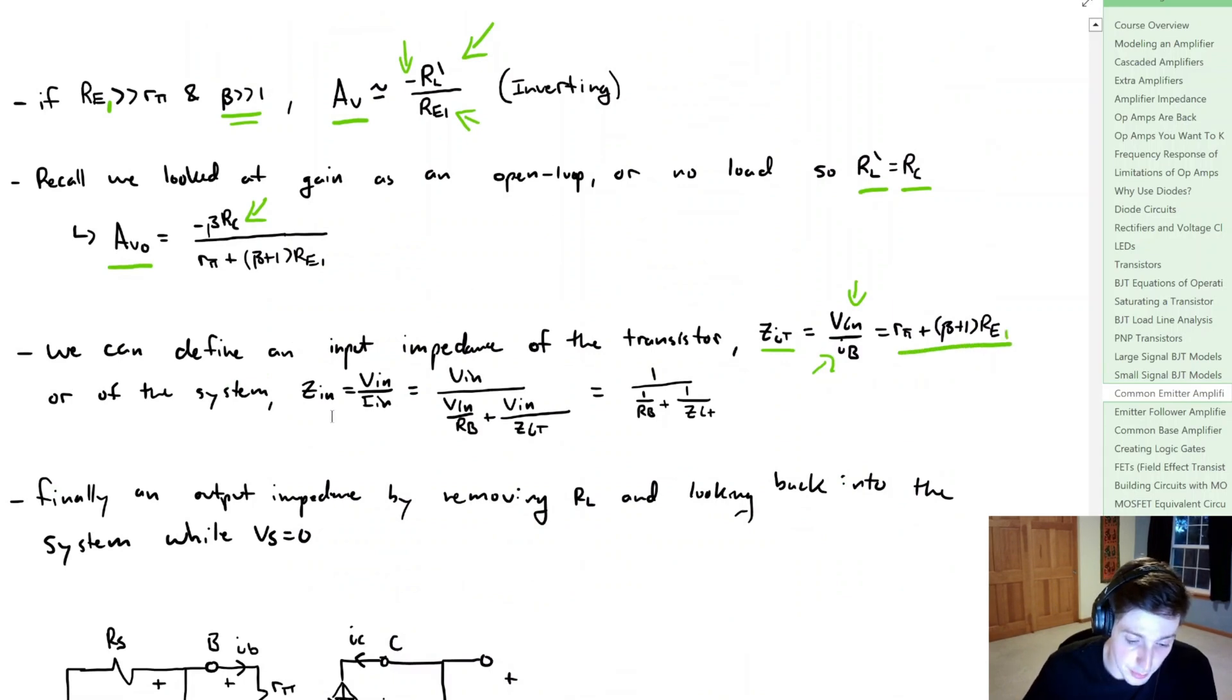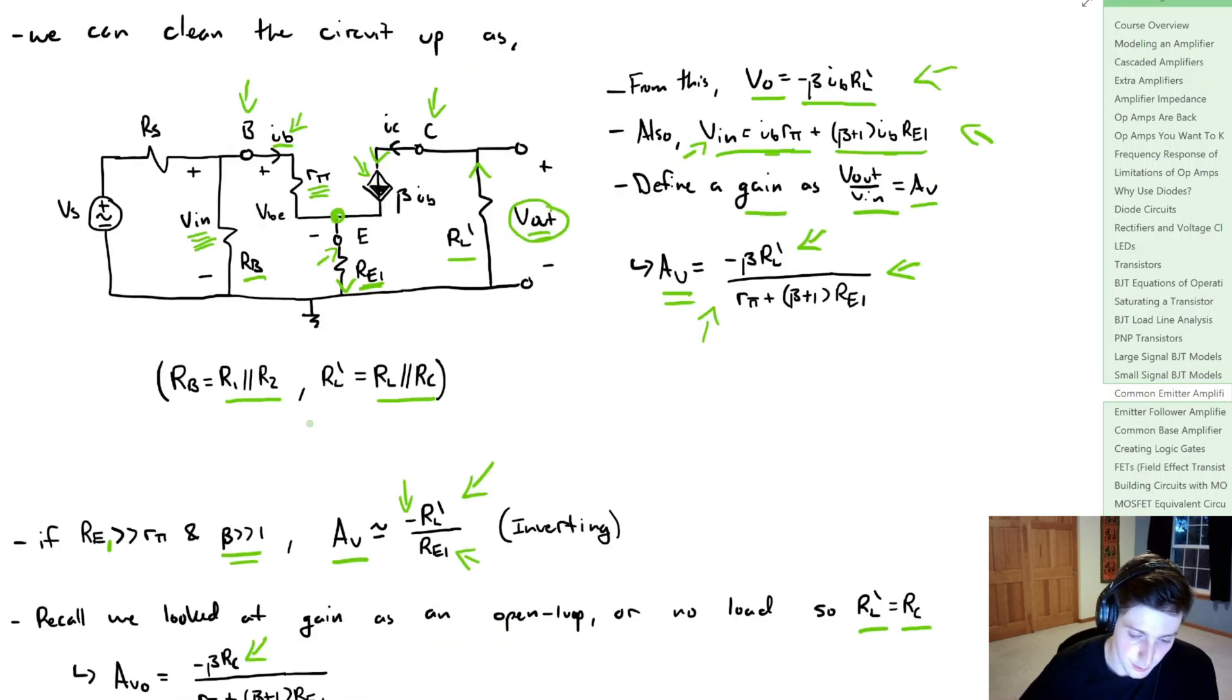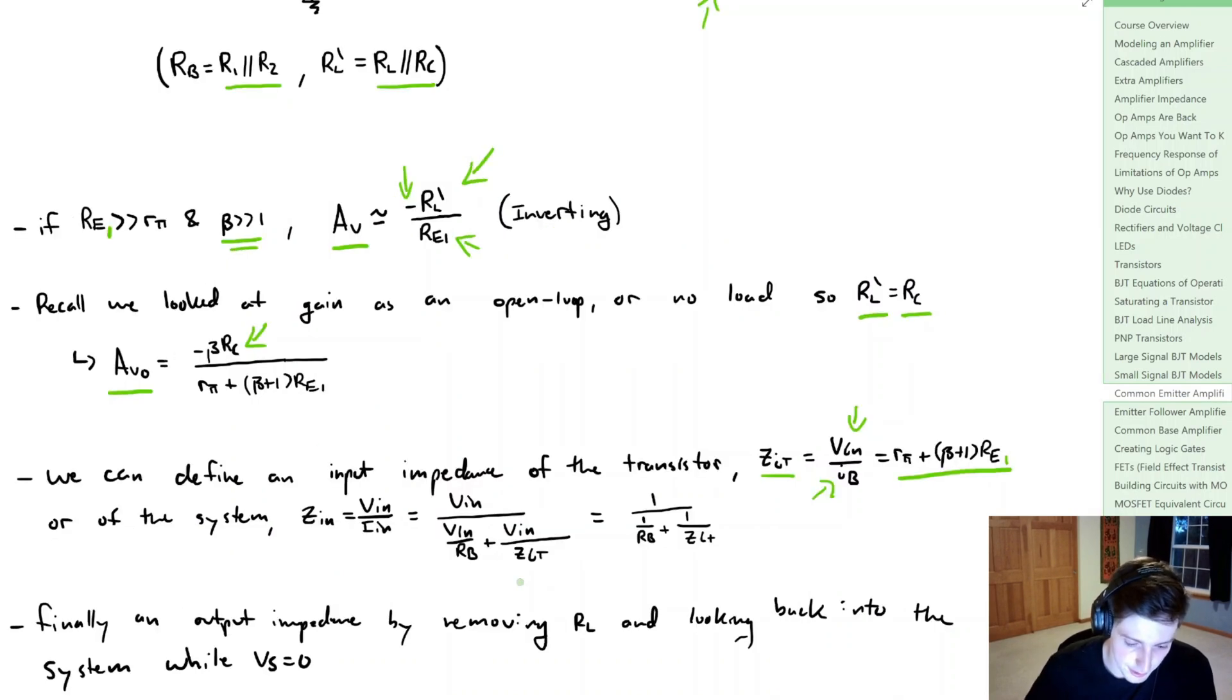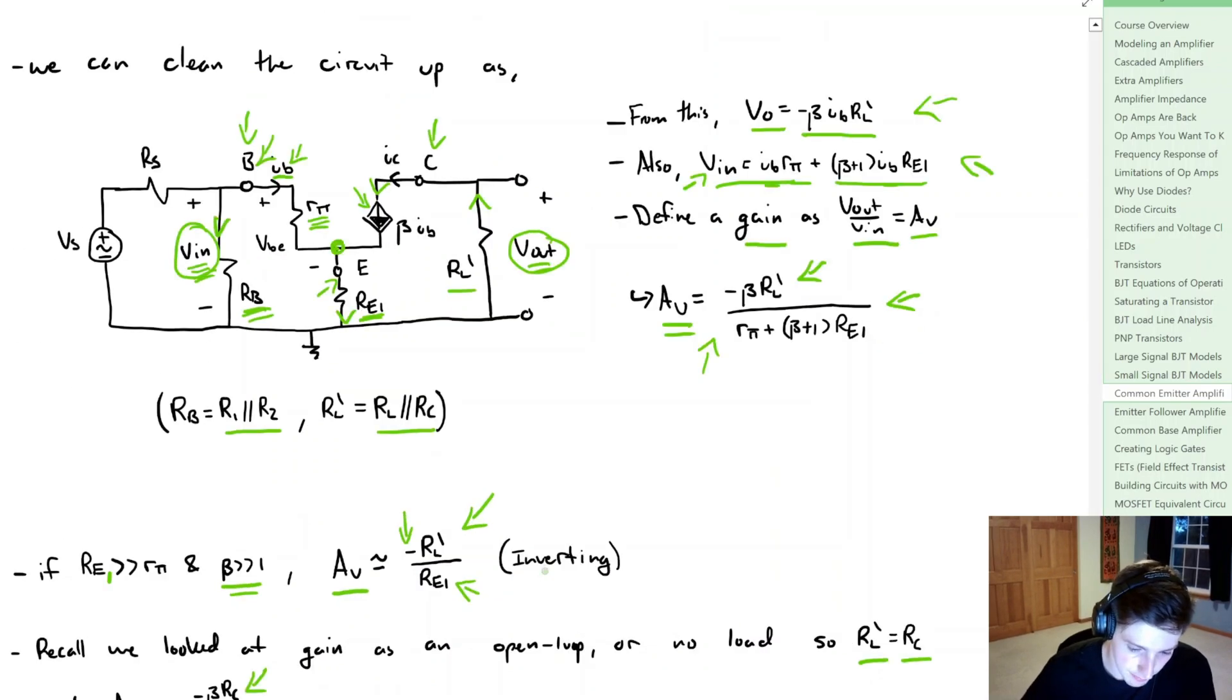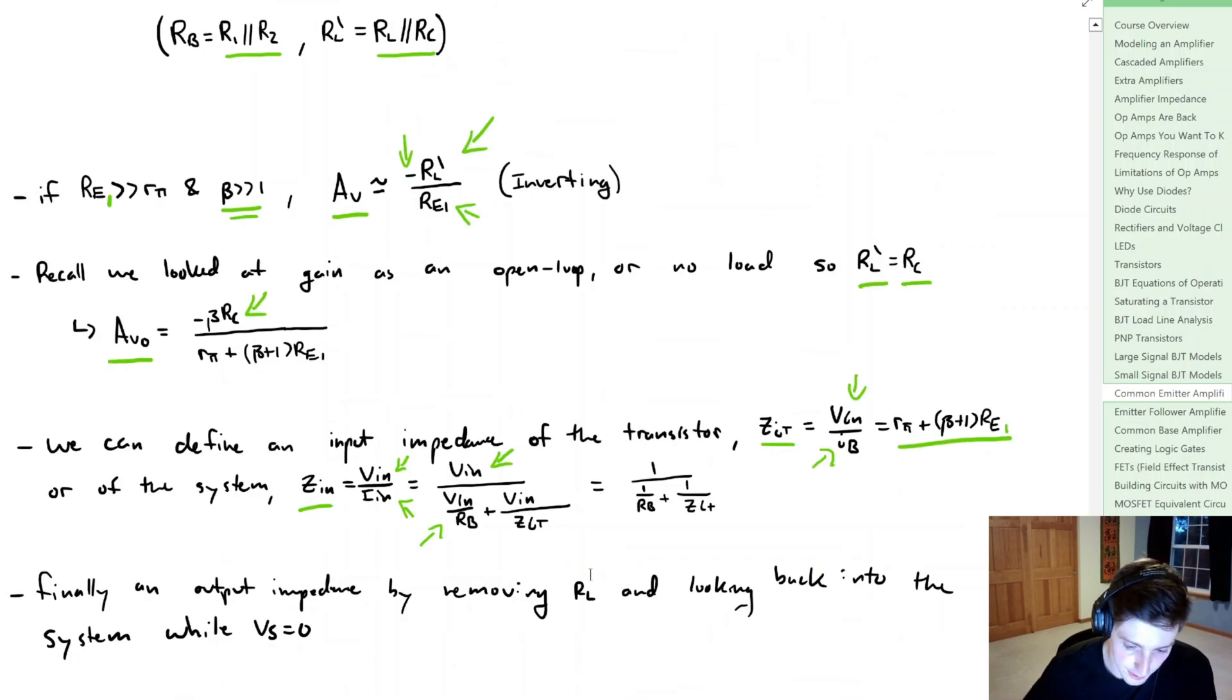Now we can also define the input impedance to the entire system, so Zin. So if we scroll up above here, we had Zin for the transistor, Zit. Now we're going to look at the input Vin. So we have to take into account this Rb resistor right here. So if we do that we can define Zin as Vin divided by Iin, which is going to be Vin divided by two terms. We have Vin divided by Rb, that's simply this current right here. And then we're going to have our other current, which is equal to Vin divided by Zit, which we just found. And we can get rid of the Vin term to arrive at this term here.